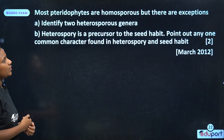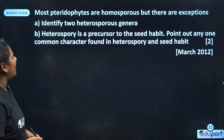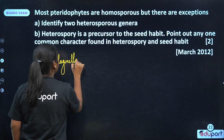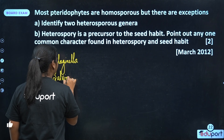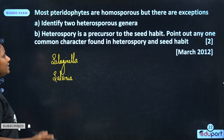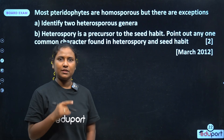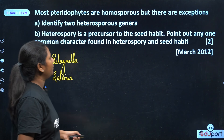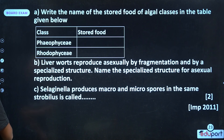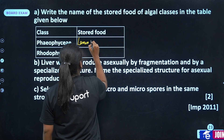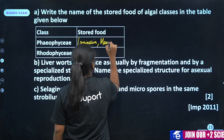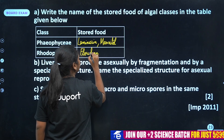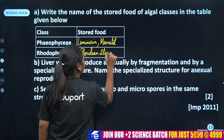Most Pteridophytes are homosporous, but there are exceptions. Write the heterosporous genera: Selaginella and Salvinia. Heterospory is a precursor to seed habit. One common character: the female gametophyte is retained inside the parent sporophyte. Stored food of algal classes: Phaeophyceae stores Laminarin and Mannitol; Rhodophyceae stores Floridian Starch.